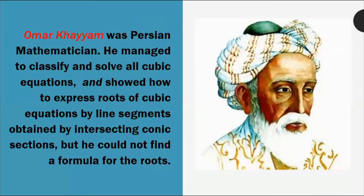In the time of Omar Khayyam, the Persian mathematician, he managed to classify and solve all cubic equations and showed how to express roots of cubic equations by line segments obtained by intersecting conic sections — but he could not find a formula for the roots. We notice in the timeline that each mathematician had his own contribution to the development of algebra. Some focused only on quadratic and linear equations, but Omar gave emphasis to cubic equations — equations of the third degree, where the highest power is three. However, he did not provide an exact formula for finding the roots of third degree equations.